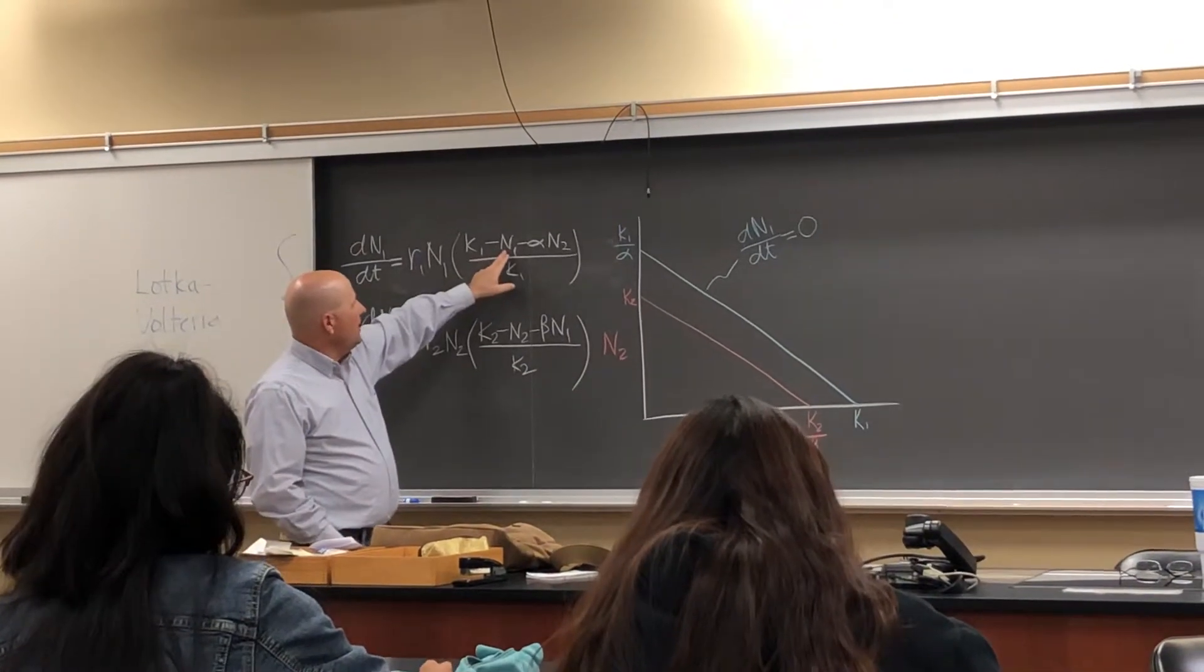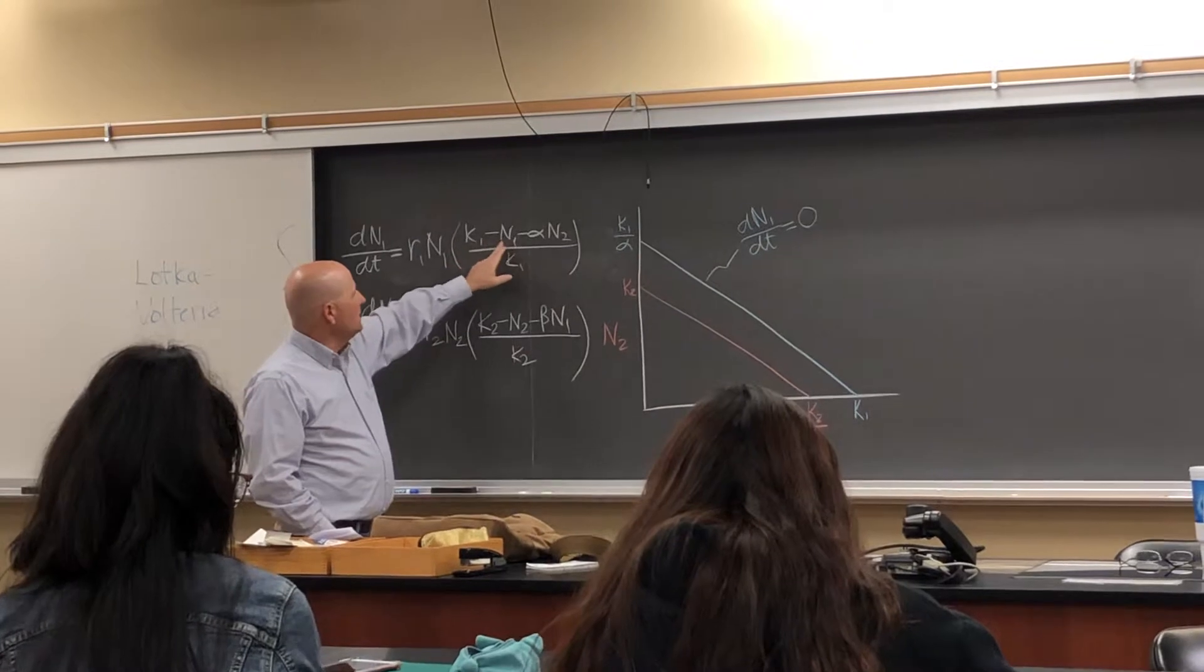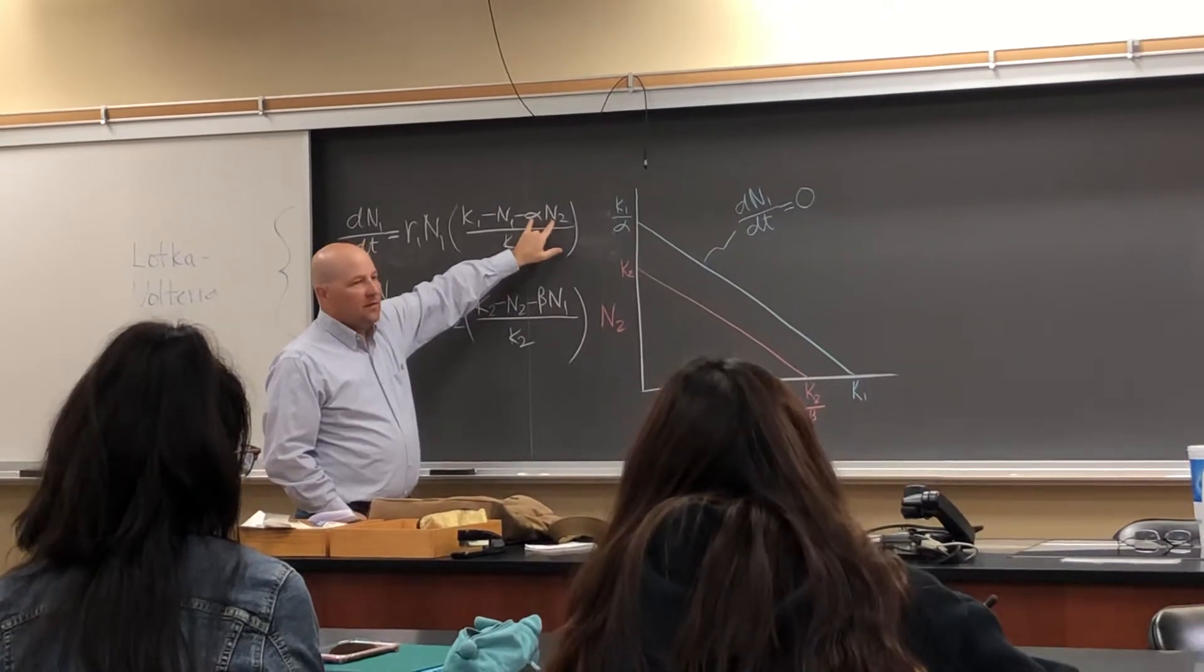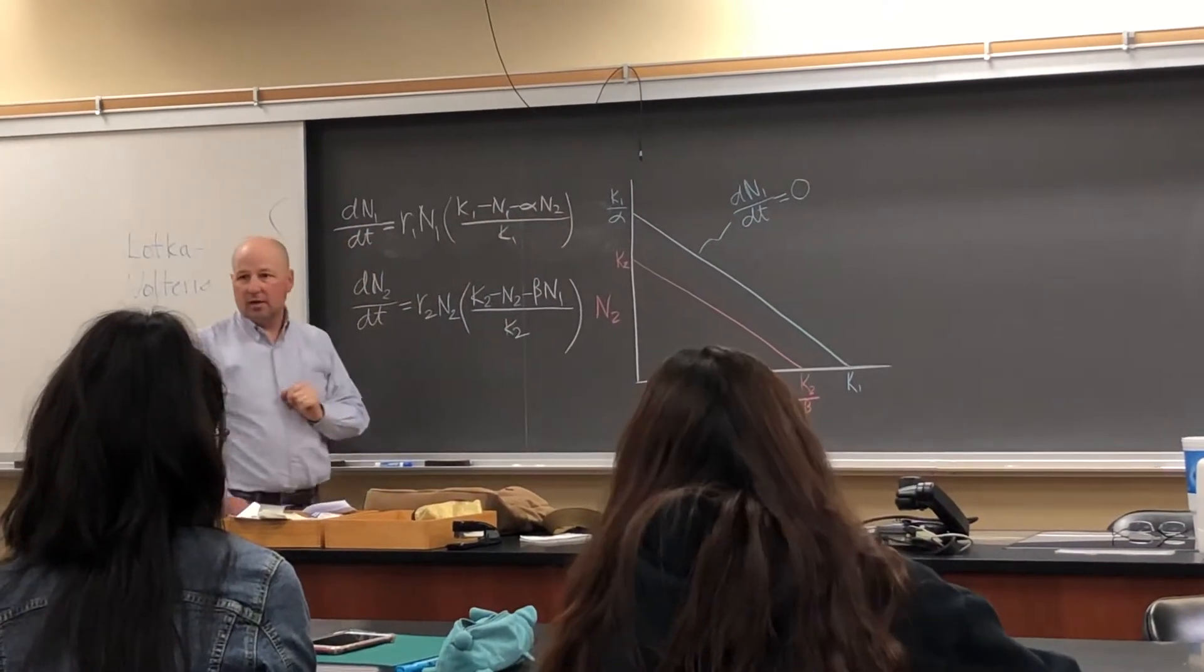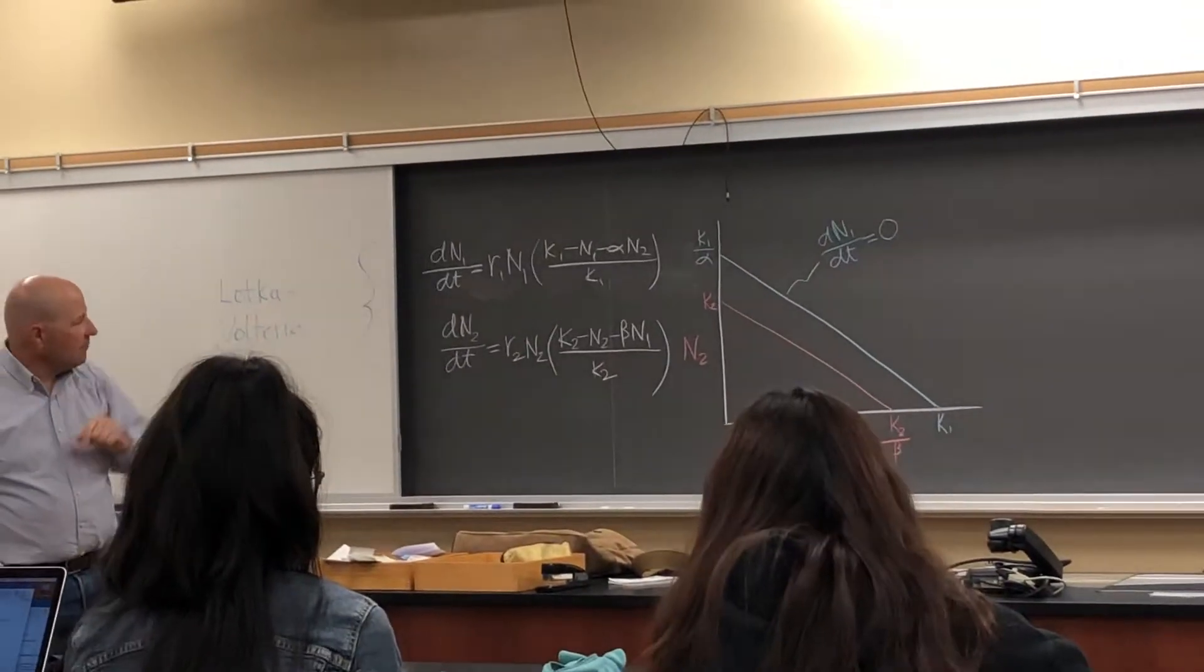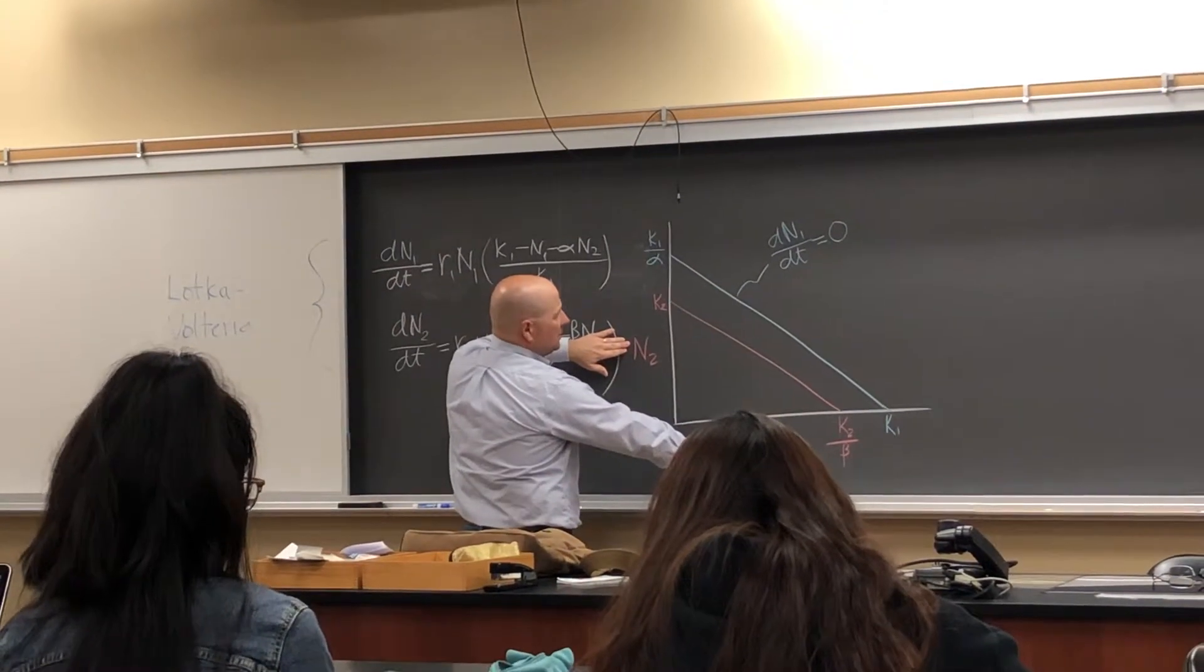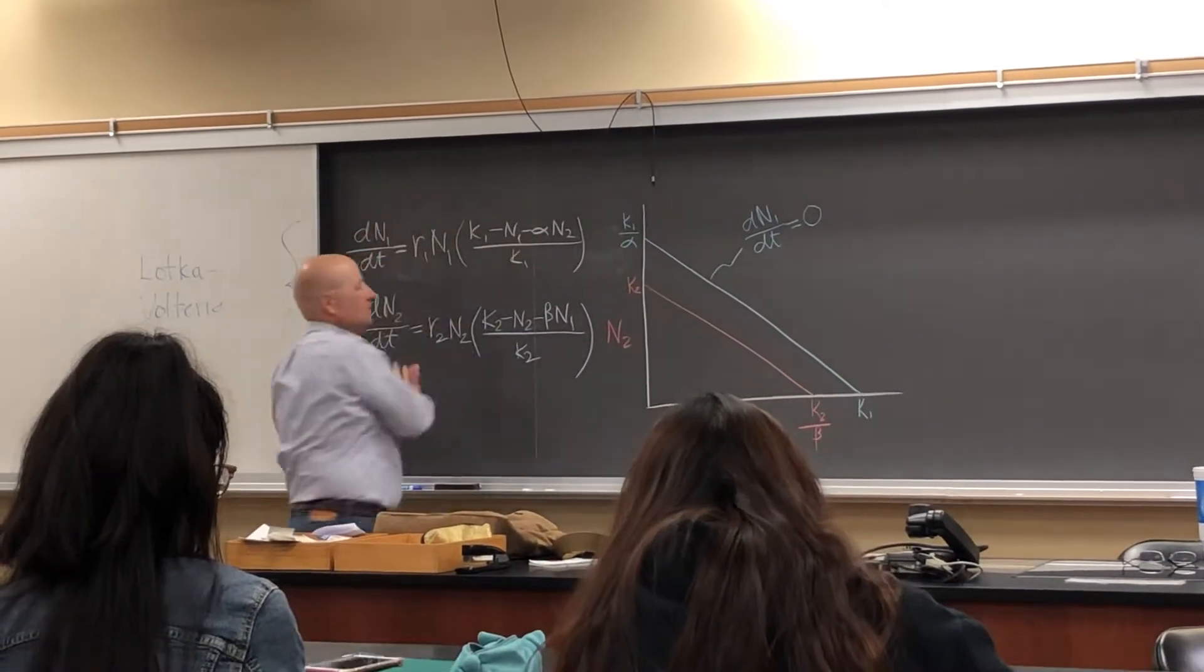But if they're lower than their carrying capacity, in other words, if N1 is less than K1, they could still be at zero growth if this factor plus this factor adds up to their carrying capacity. And so that blue line represents all the values of N1 and N2 that can make this add up to zero.